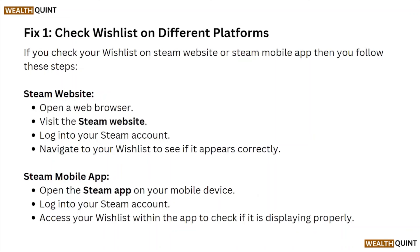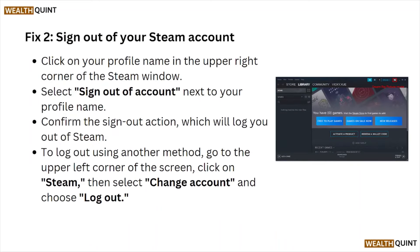If you check your wishlist on the Steam website or the Steam mobile app, you can follow some of these steps. Open the web browser, visit the Steam website, login to your Steam account, and navigate to the wishlist to see if it appears correctly. For the Steam mobile app, open the Steam app on your device, login to your Steam account, and access the wishlist within the app to check if it displays properly.